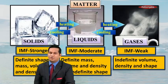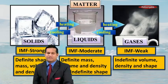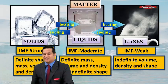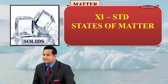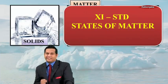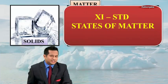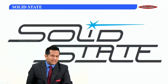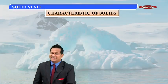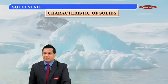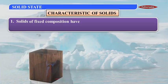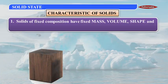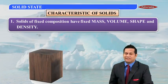That's what you should know about the three states of matter. Liquids and gases we have already discussed in 11th standard in the chapter 'States of Matter,' so right now we are going to discuss solid state in detail. The first characteristic of solids is that solids of fixed composition will have fixed mass, volume, shape, and density.